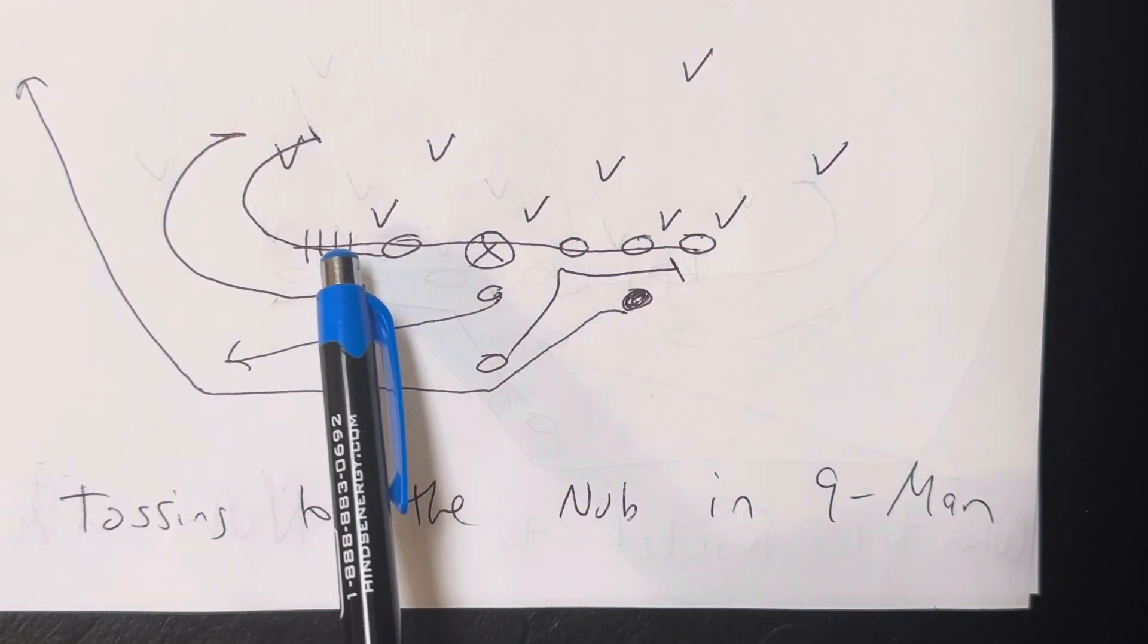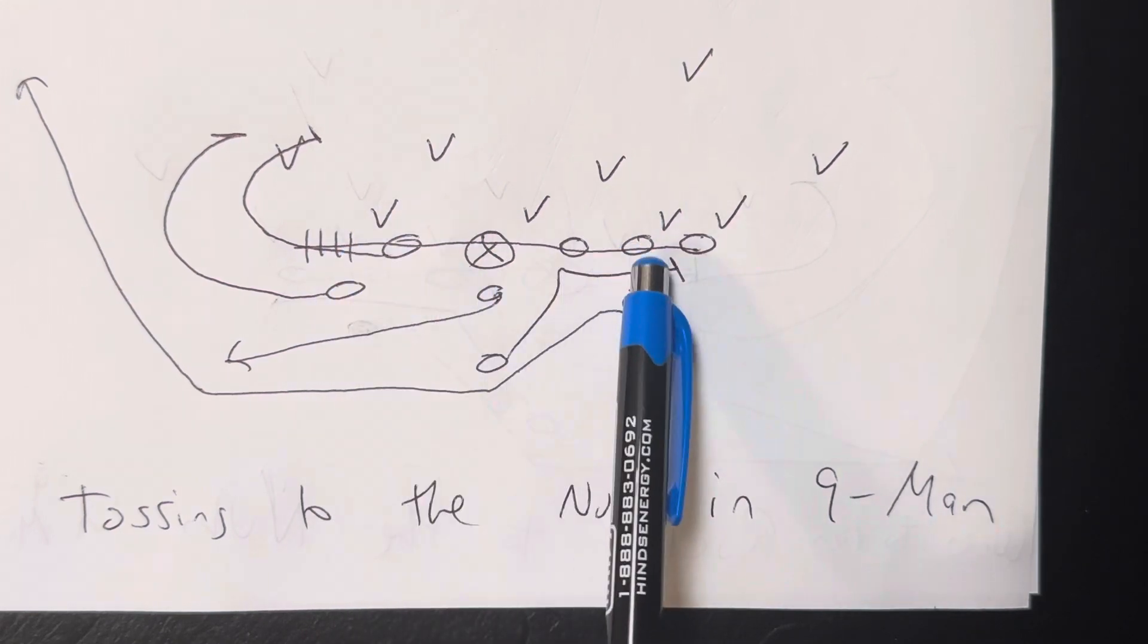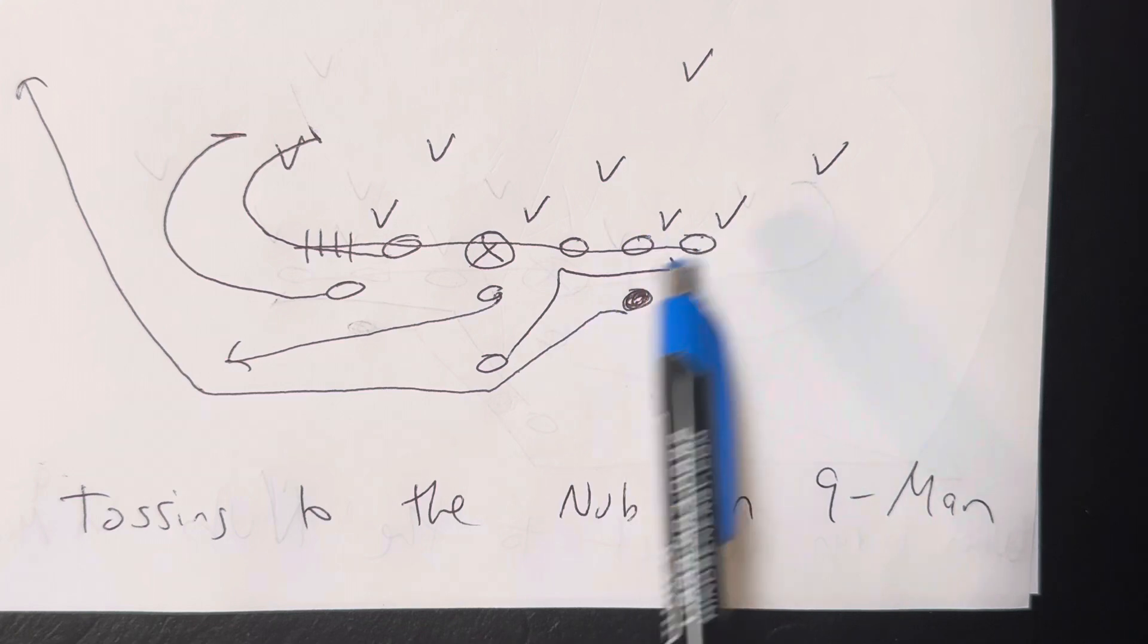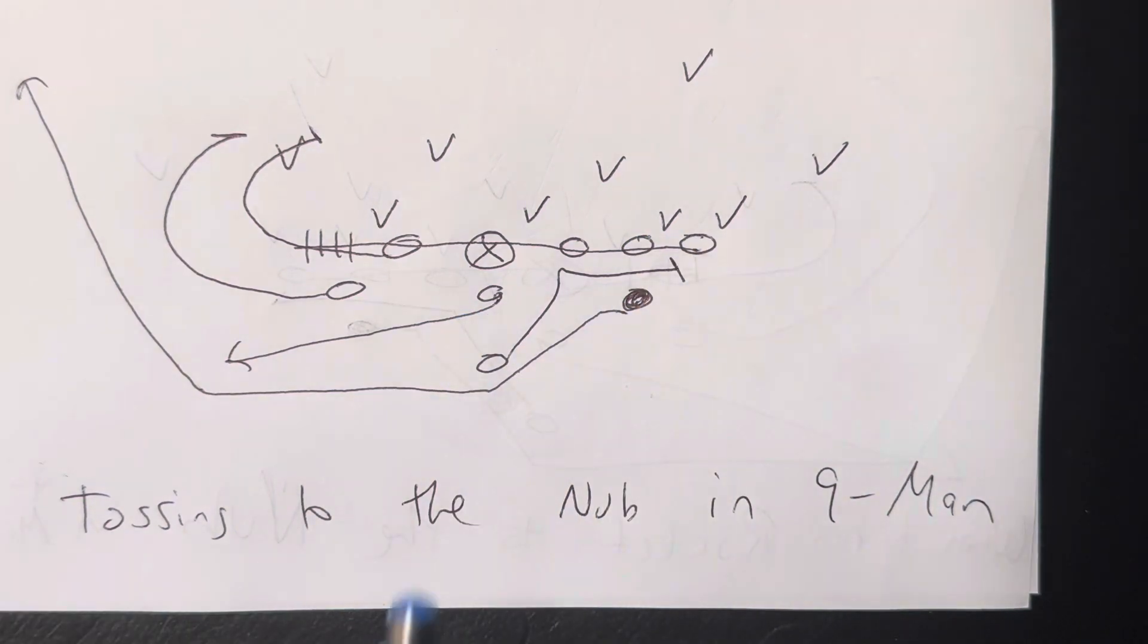and in nine-man football, when you bring the guard over, we have an A back, an end, a center, a guard, a guard, an end, an A, quarterback, and a B back.